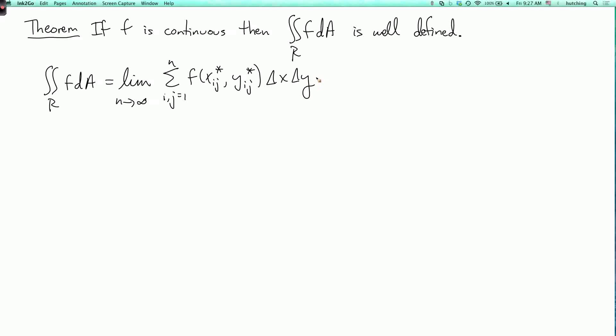Now, just from this expression, we can read off some very basic properties. So, first of all, what if we just integrate 1? Well, in that case, f is equal to 1 everywhere, so we're just summing up delta x times delta y. And remember, this is the area of the rectangle R_ij. So, we're just summing up the areas of all of the sub-rectangles. And so, this sum for every n is equal to just the total area of the rectangle. This is just the area of R.